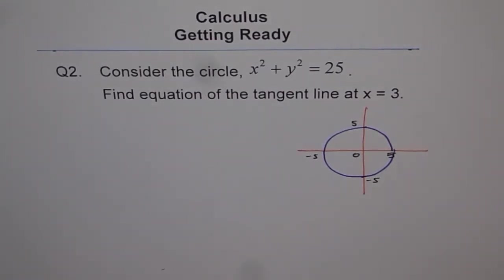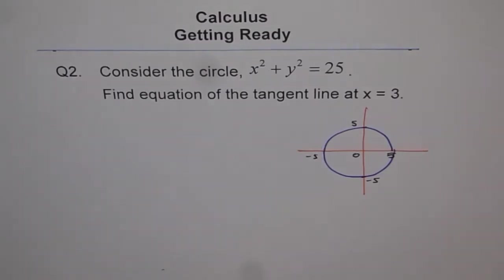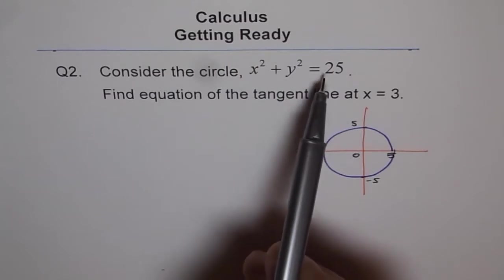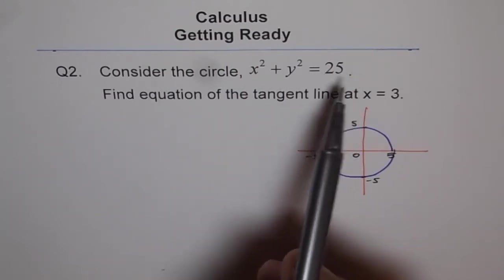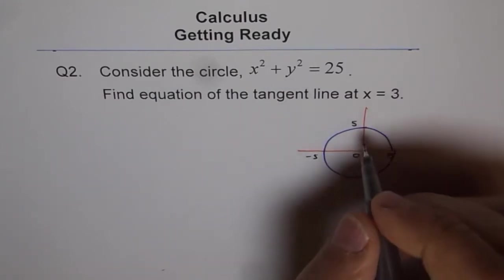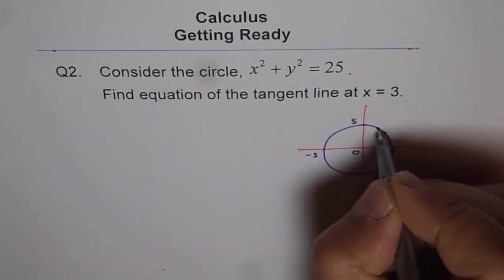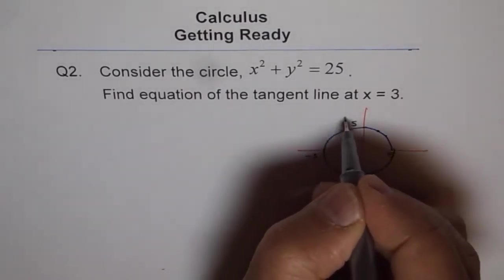And what we are supposed to do here is find equation of tangent line at x = 3. So if you put x = 3, you get 3² and 25 - 9 which is 3² will give you 16 and square root of 16 is 4. So we do have a point here which is at 3, we have 4. So we have a point here which is 3, 4. So at that point we do have a tangent.